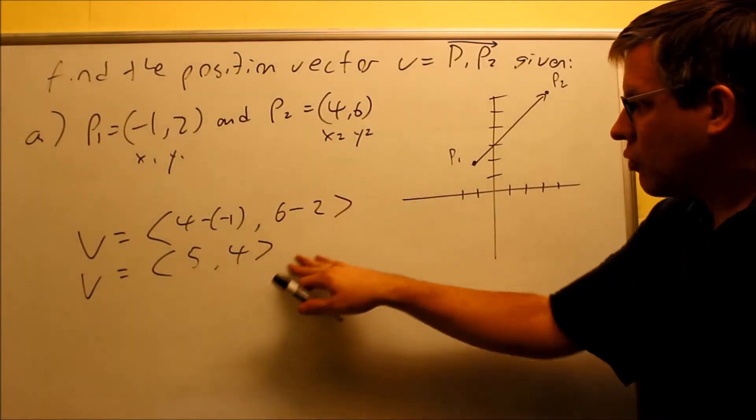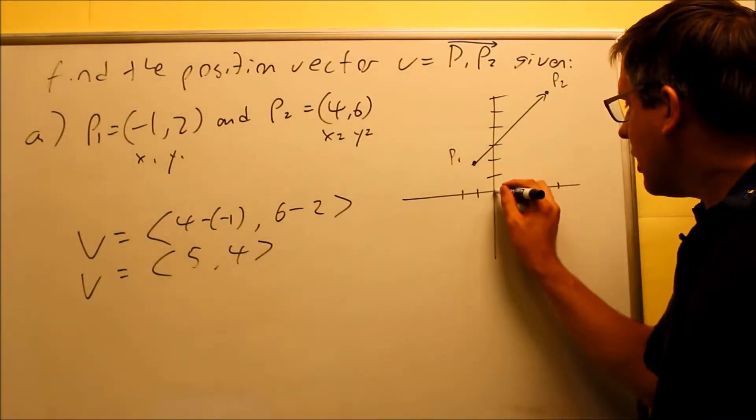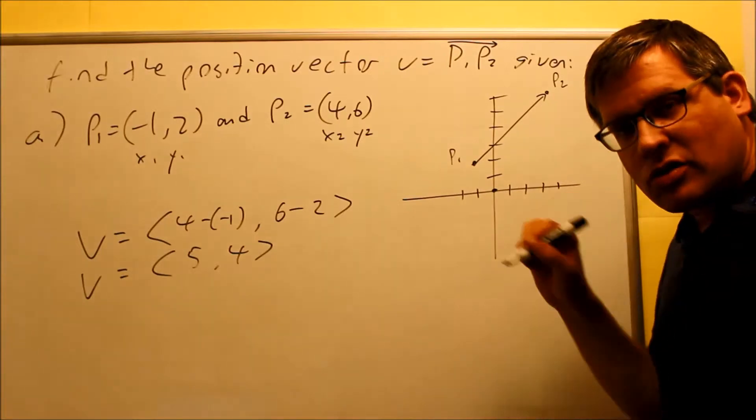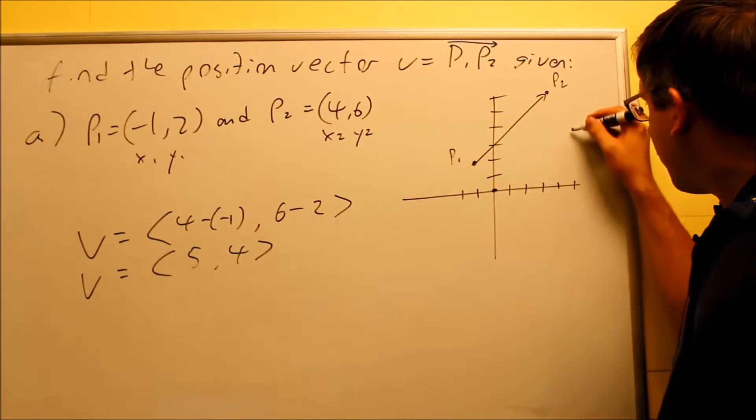Now when I went through this work here with the formula, my answer was 5, 4. Well, that means I found a vector now that does start at the origin at 0,0. I'm going to go over 5 and I'm going to go up 4.